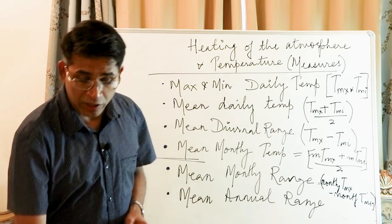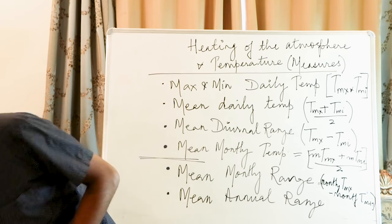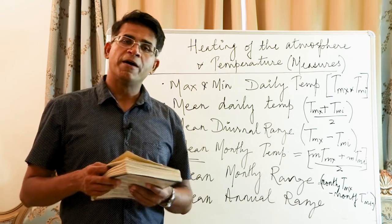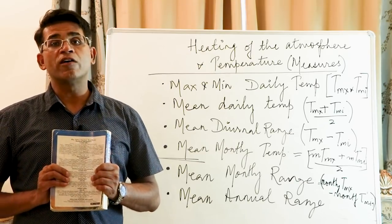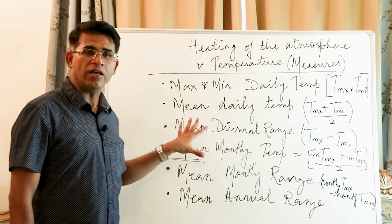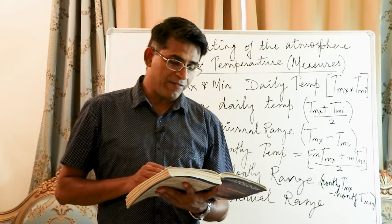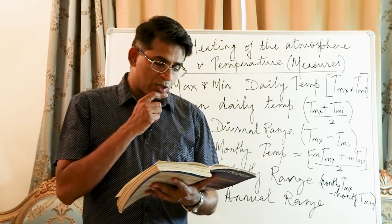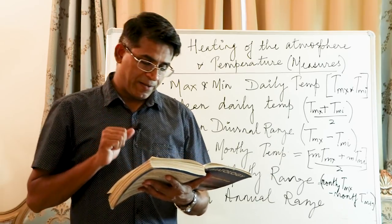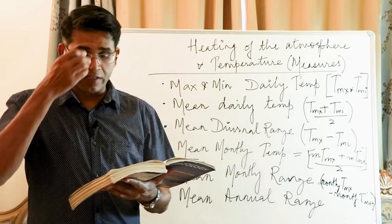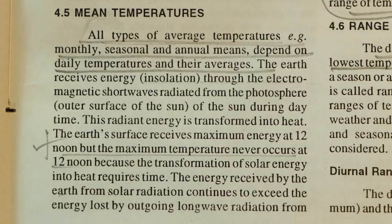I'll help you look this up through the textbook — Climatology by Savendra Singh. Those with geography optional should read more; GA students may just know the terms. Chapter 4 is about temperature and heating, page 57, first column: 'All types of average temperatures — monthly, seasonal, and annual means — depend on the daily temperatures and their averages.'